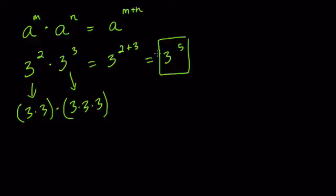That means you have a group of five 3s being multiplied, and this idea extends into division. If we're dividing two numbers with the same base, instead of adding, we subtract. So here this would equal A to the M minus N.